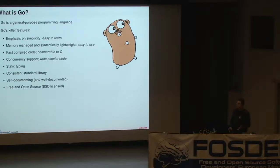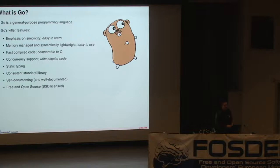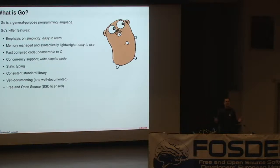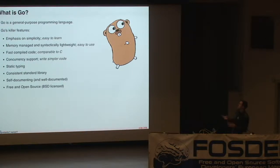For those of you who don't know, Go is a general purpose programming language. We built it as a systems language when we first announced it, but it's turned out to be useful for a wide variety of things, not just systems programming. I've got a list of its killer features — the things that make it special in combination. First of all, it has a strong emphasis on simplicity in its design. It's very easy to learn. All of the language features are very simple in and of themselves, and they're orthogonal — the way that language features interact is very easy to predict and simple to understand.